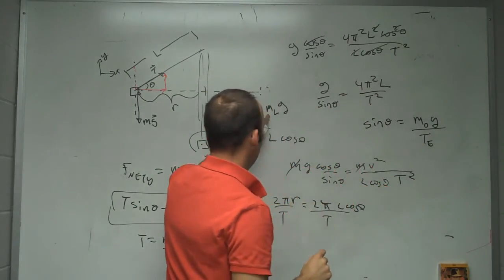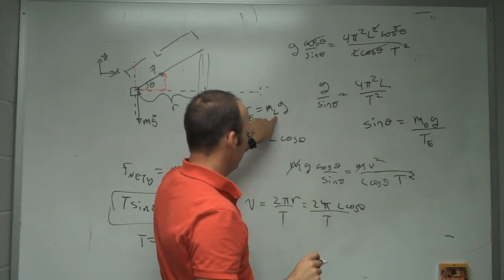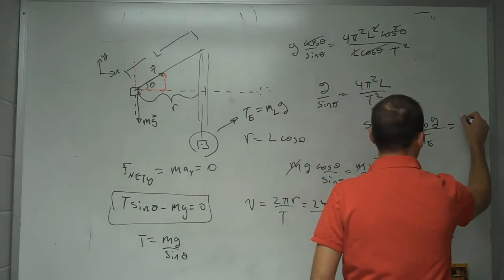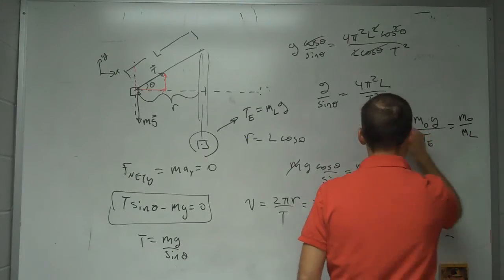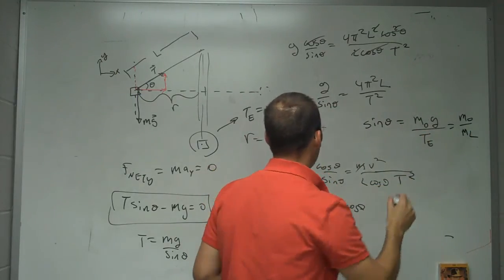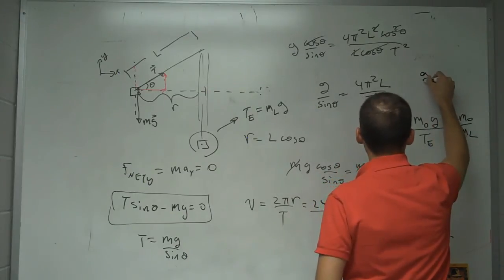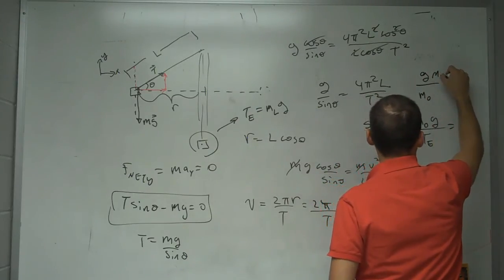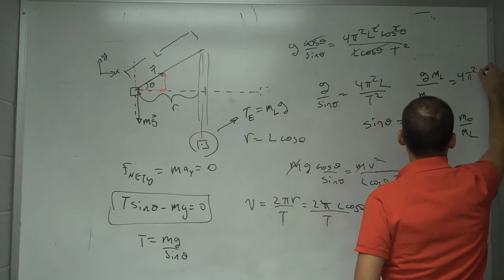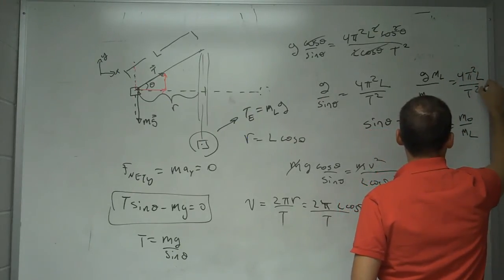Where tension is mass of the load, times g. So, this is going to be mass of the object, over mass of the load, is sine theta. So, if I put that in right here, I get g, over m object, m load, equals 4 pi squared, l, over period squared.